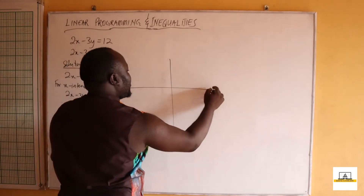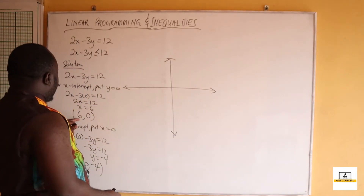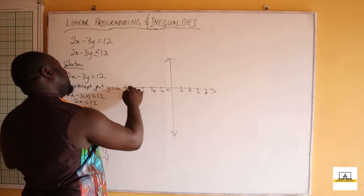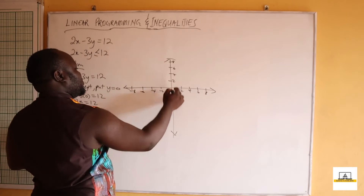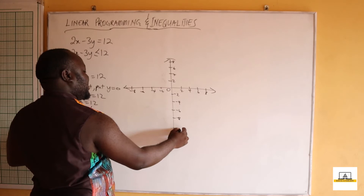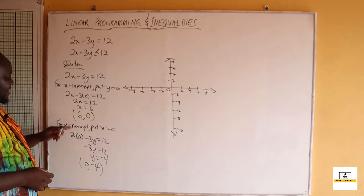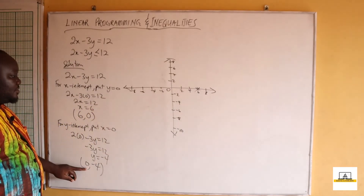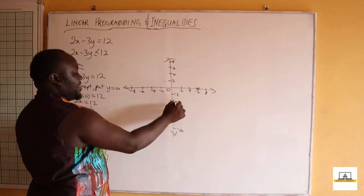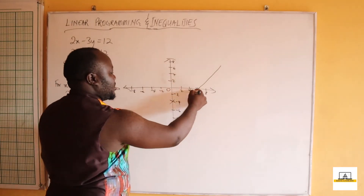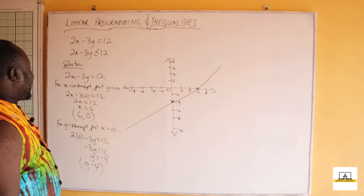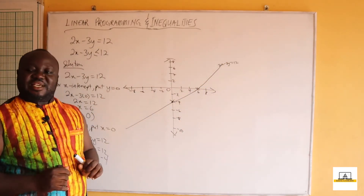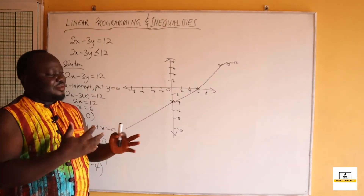With these two points we go to our OXY plane and draw the line. We plot 6 on the x-axis at y equals 0, and the point (0, -4) on the y-axis. Using a ruler we draw the straight line through both points. This is the line 2x minus 3y equals 12. Note that you'll be doing this in your graph book — I'm just giving you a sketch here.